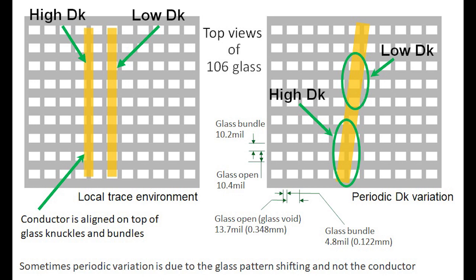Shown here is a top view of 106 glass with different arrangements of conductor alignment. On the right side is the periodic Dk variation, which I think is a bigger concern for millimeter wave. What you get is a zipper effect where you have high Dk, low Dk, high Dk as you move down the trace length. In the circled high Dk area the conductor goes over a region of bundles and knuckles. As you move farther along the trace, it aligns over open areas alternating with bundles, giving lower Dk. At millimeter wave frequencies with very small wavelengths, this periodic high-low Dk variation can cause resonances and even spurious modes, which can be very problematic.